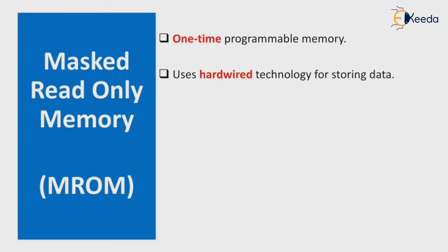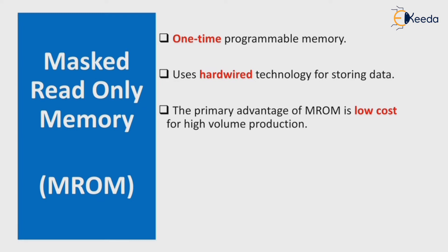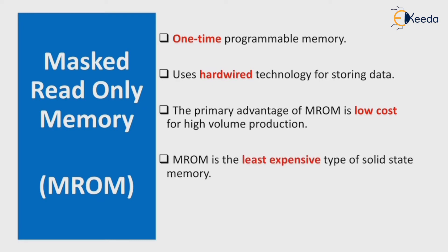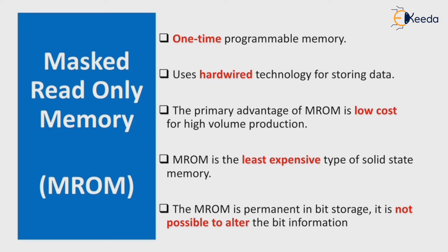The first type is Masked Read-Only Memory, or MROM. It is a one-time programmable memory — you cannot reprogram it. It uses hardware technology for storing data. The primary advantage of MROM is low cost for high-volume production. It is the least expensive type of solid-state memory. MROM is permanent in bit storage; it is not possible to alter the bit information because it is not reprogrammable.